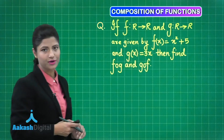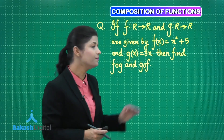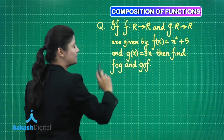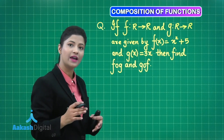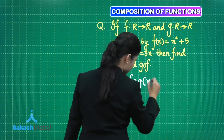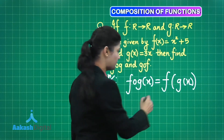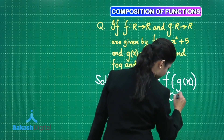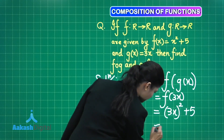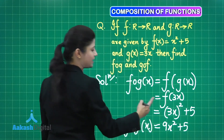Let's discuss a basic example. If F and G are functions from ℝ to ℝ, where F(x) = x² + 5 and G(x) = 3x, find F∘G and G∘F. For F∘G(x): G(x) = 3x, so F∘G(x) = F(3x) = (3x)² + 5 = 9x² + 5.